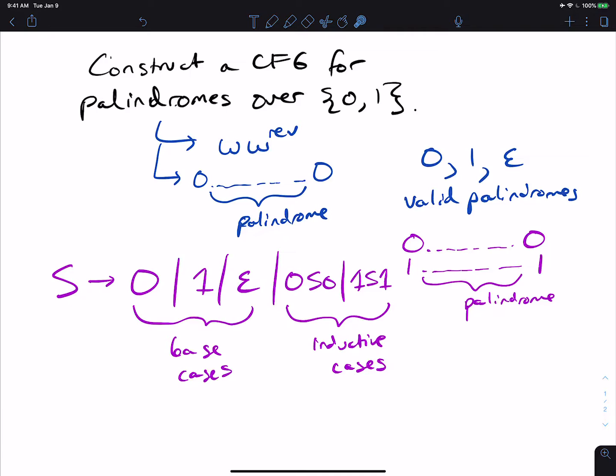But if it's odd length, then we'll be applying these rules some number of times. And eventually, we'll stop on 0 or 1, which is exactly what we want.